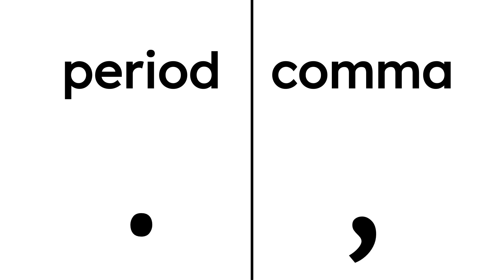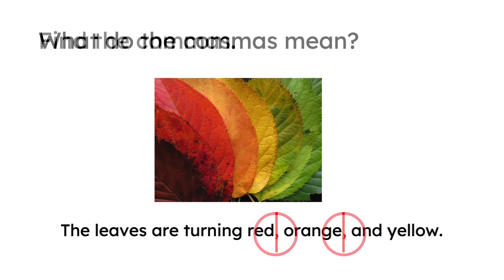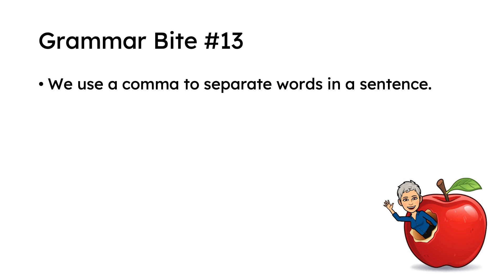That's right. And the comma is different from a period. A period means full stop, where a comma separates things in a sentence. Here's the example I gave: the leaves are turning red, orange, and yellow. Grammar Bite 13 was: we use a comma to separate words in a sentence.